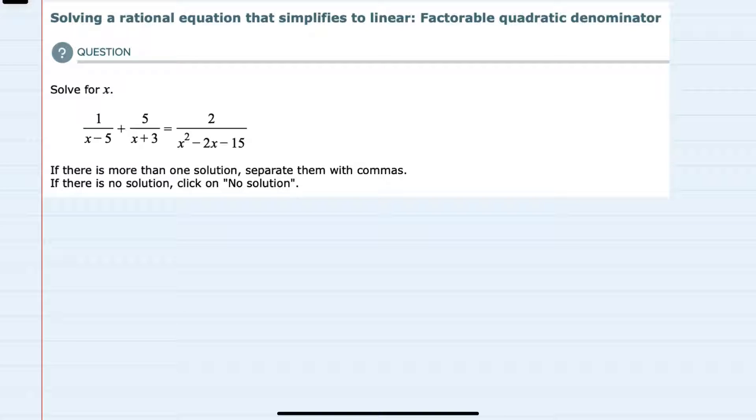We're asked to solve for x, and since x is in the denominator, we're going to need to find the lowest common denominator. But first, we need to factor where possible. And in this example, the x squared minus 2x minus 15 is factorable. So that's going to be our first step.